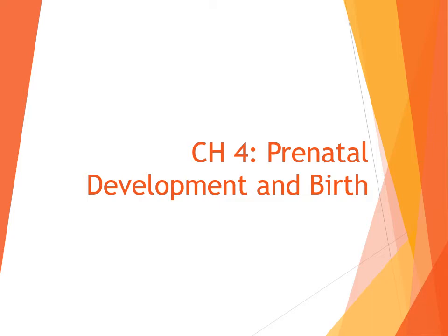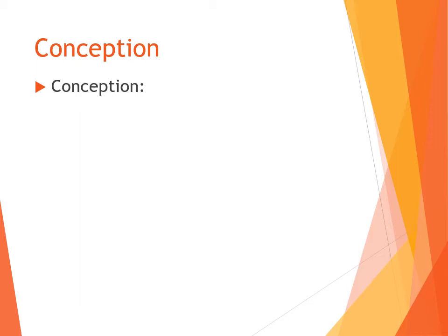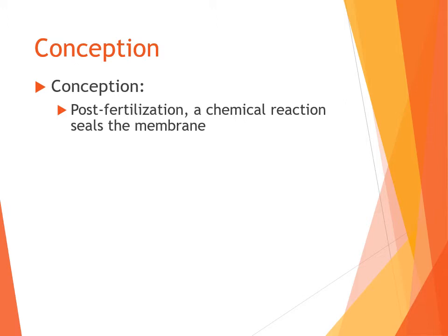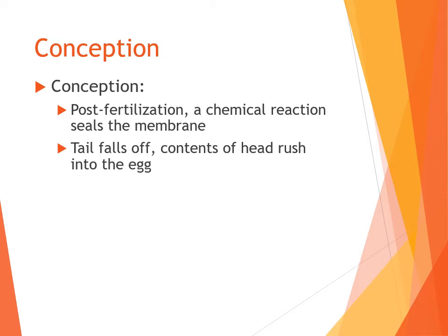Hello everyone, we're going to get into chapter four here, which is prenatal development and birth. We're going to start at conception. Immediately following fertilization, after the sperm cell makes contact and embeds itself within the ovum, a chemical reaction happens that seals off the membrane surrounding the ovum so that no other sperm can penetrate the egg cell.